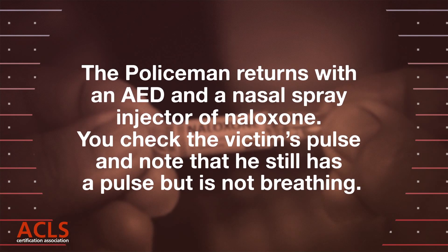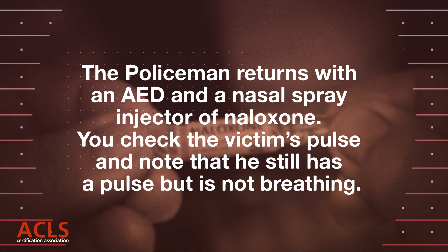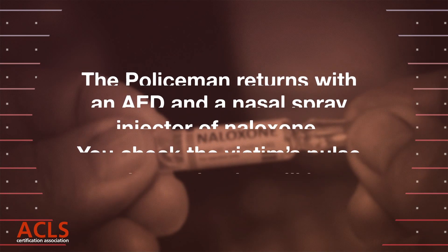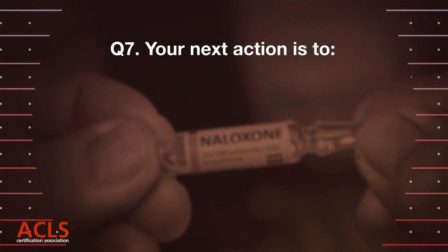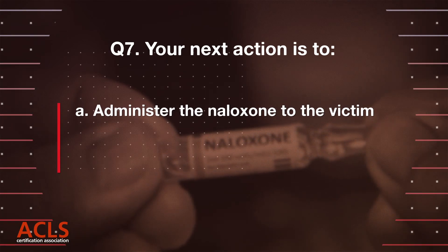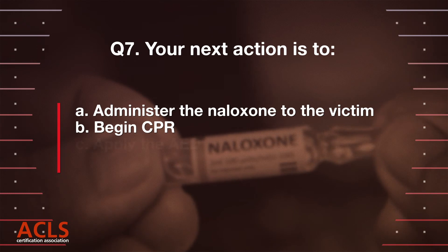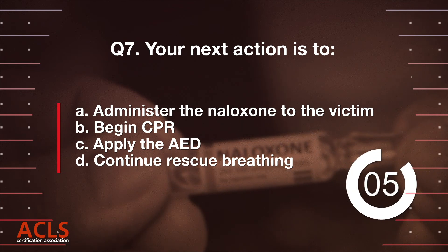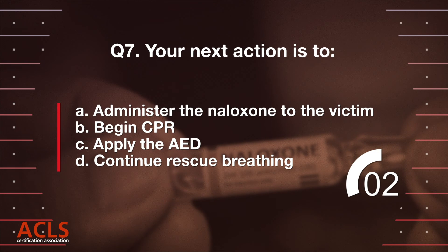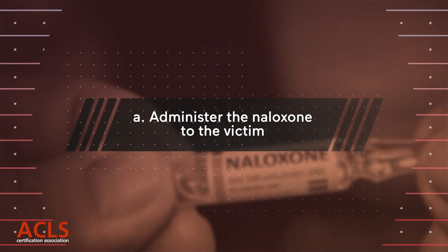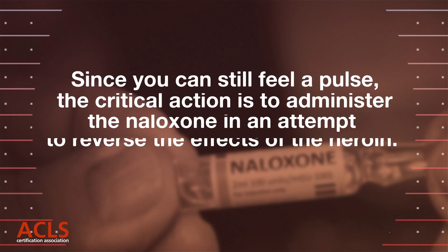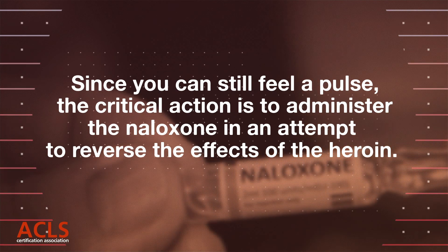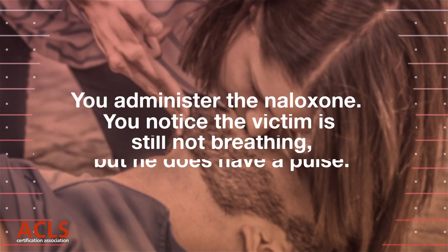The policeman returns with an AED and a nasal spray injector of naloxone. You check the victim's pulse and note that he still has a pulse but is not breathing. Question 7: Your next action is to: A) administer the naloxone to the victim, B) begin CPR, C) apply the AED, or D) continue rescue breathing. Correct answer: A, administer the naloxone to the victim. Since you can still feel a pulse, the critical action is to administer the naloxone in an attempt to reverse the effects of the heroin. You administer the naloxone.